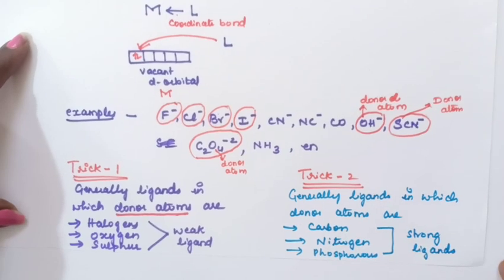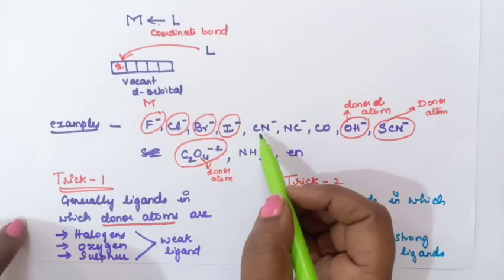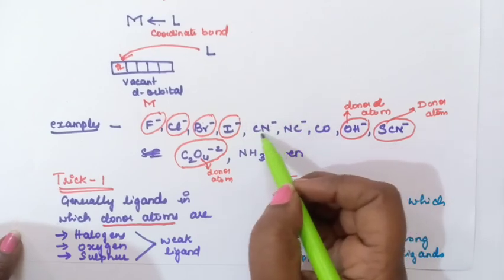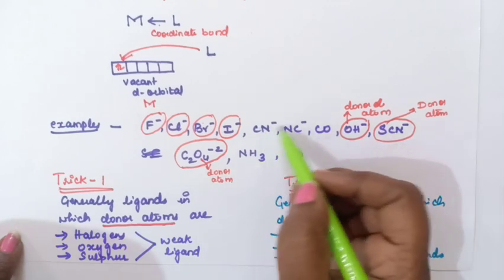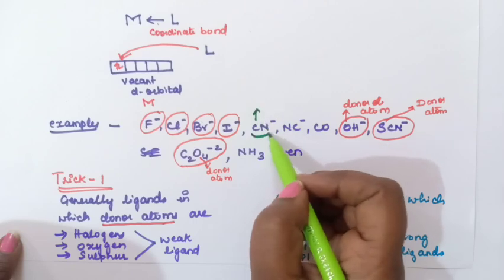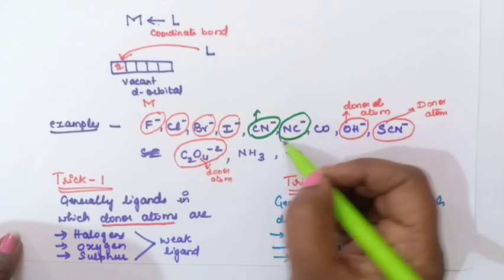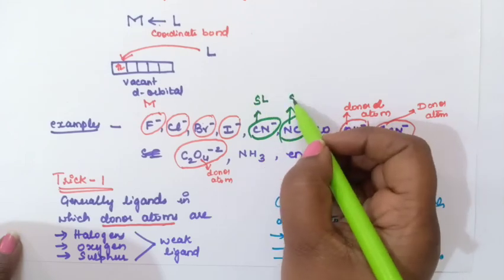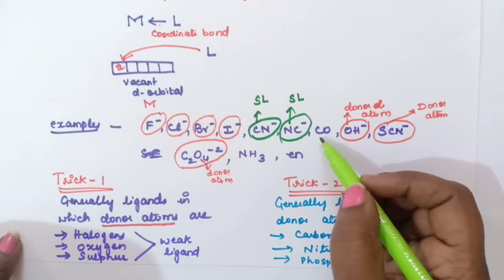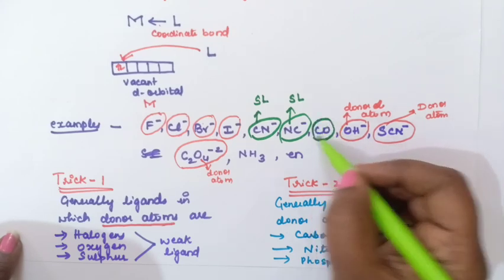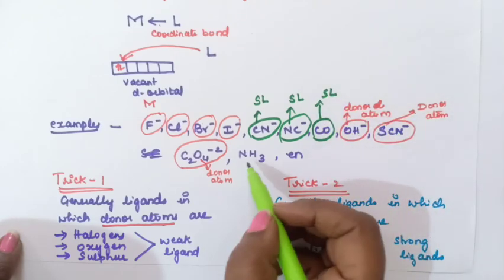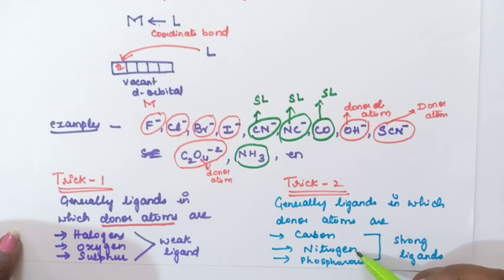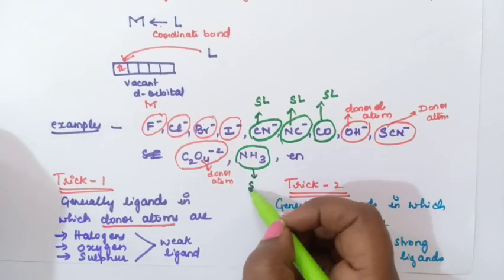Now let us identify the strong field ligands and circle them. In CN⁻, carbon is the donor atom, so CN⁻ is a strong ligand. In NC⁻, nitrogen is the donor atom, so NC⁻ is also a strong ligand — we write SL for strong ligand. In CO, carbon is the donor atom, so CO is also a strong ligand.